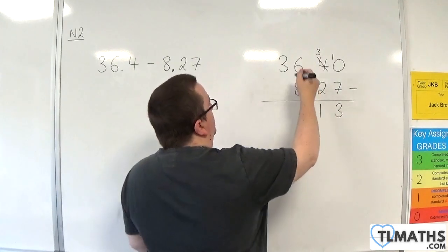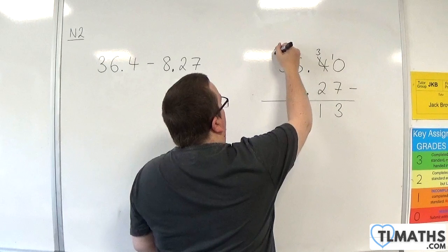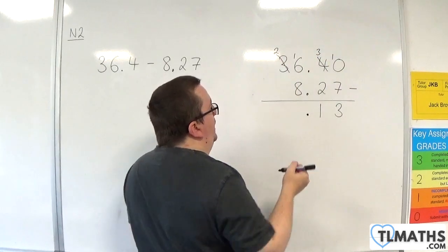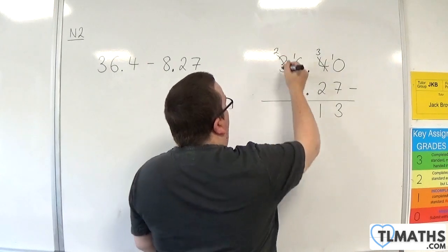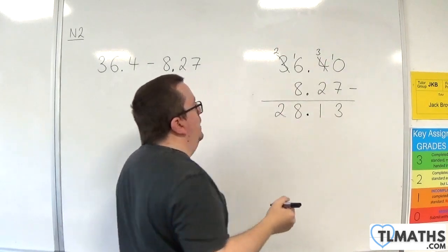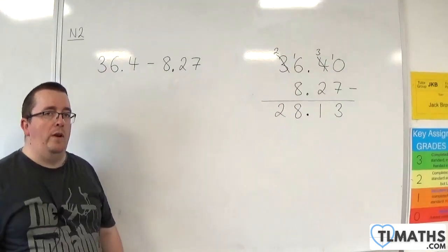6 take away 8. I can't do that. So, I'm going to need to borrow 1 from the 3. And now I have 16. 16 take away 8 is 8. And then 2 take away 0 is 2. And so, we get 28.13.